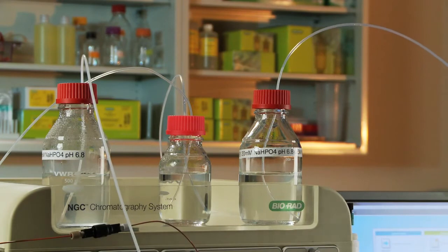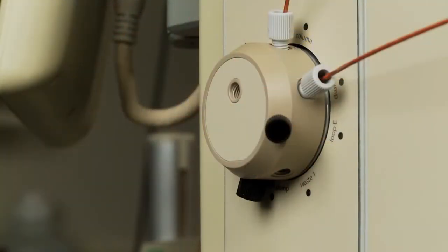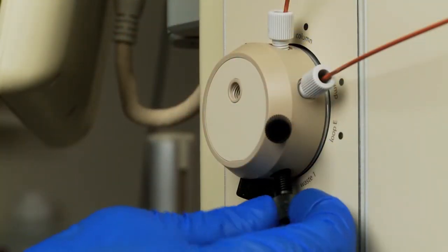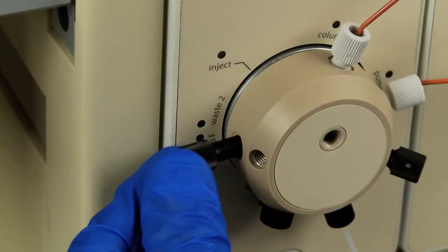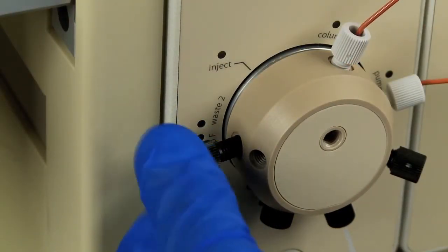Inlet solvent filters may be used. Now you will make tubing connections to the inject valve. Connect the waste lines to waste ports 1 and 2 on the inject valve and place the ends into the waste container.